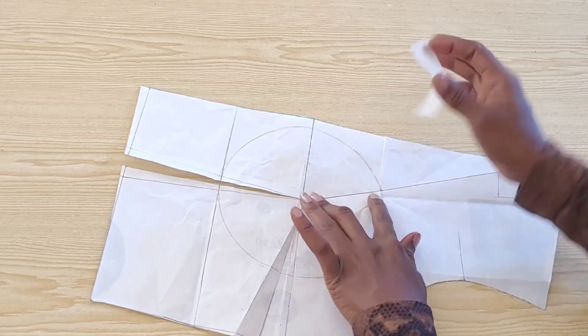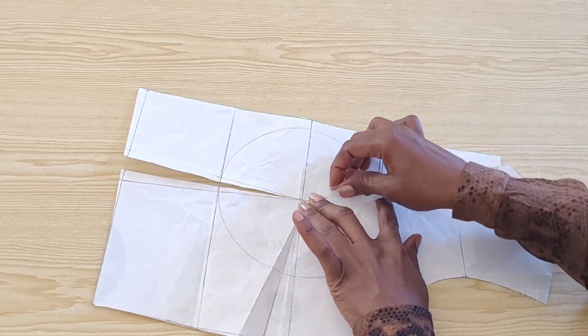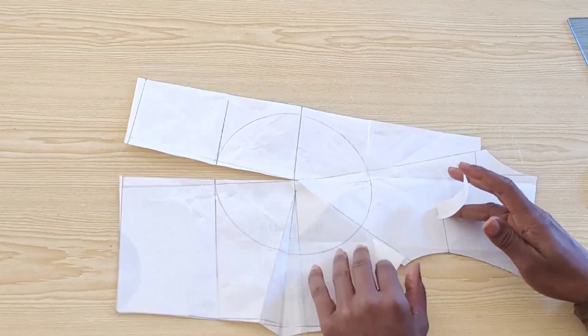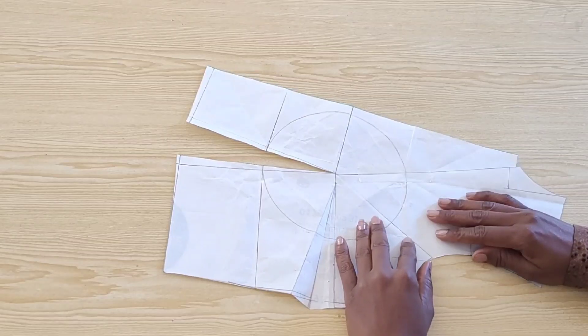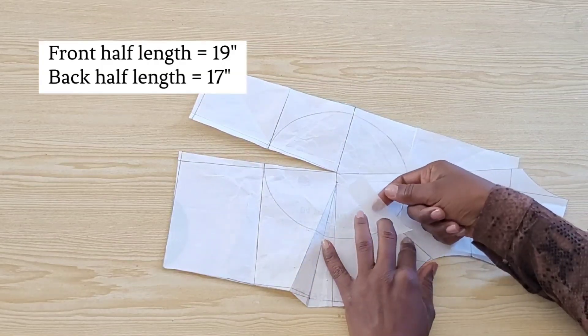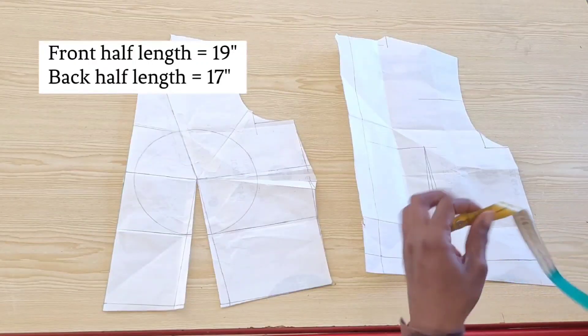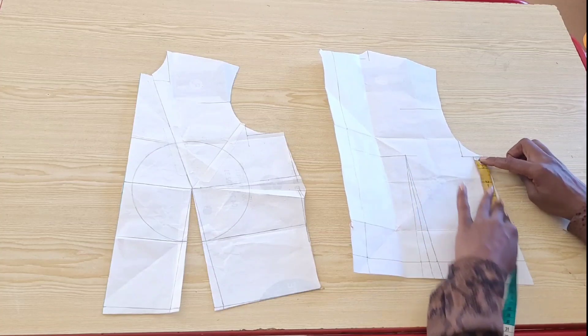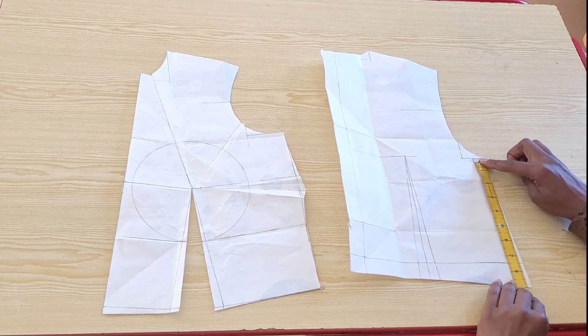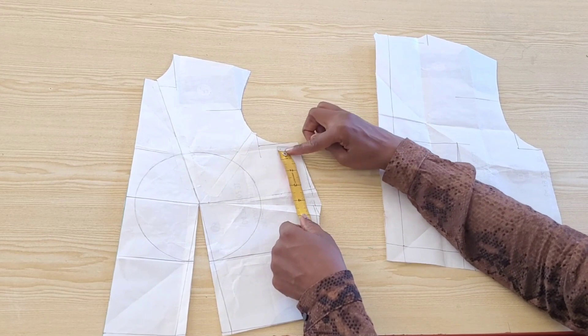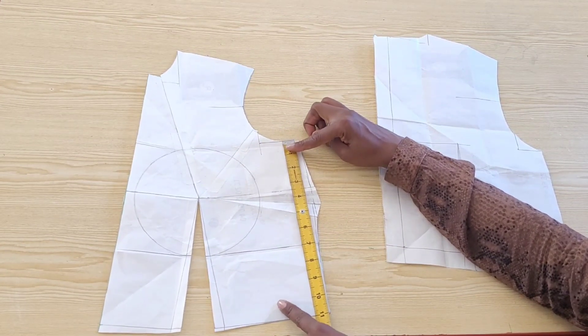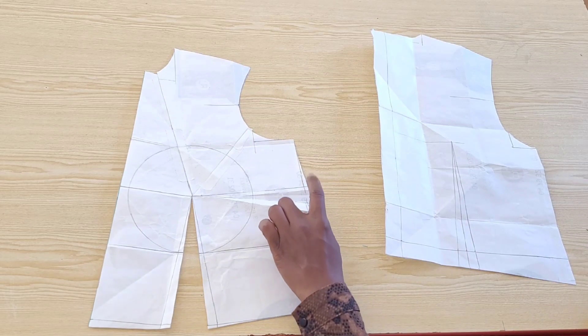Before we continue, guys, I'd like to show you how to balance off the side seams of your front and back bodice in case the front bodice is longer than the back, like in the case of my client. The side seam of the back bodice of my client measured nine inches, while on the front it measured 11 inches, including the one inch standard dart. So when I close this dart, I'm going to have 10 inches.